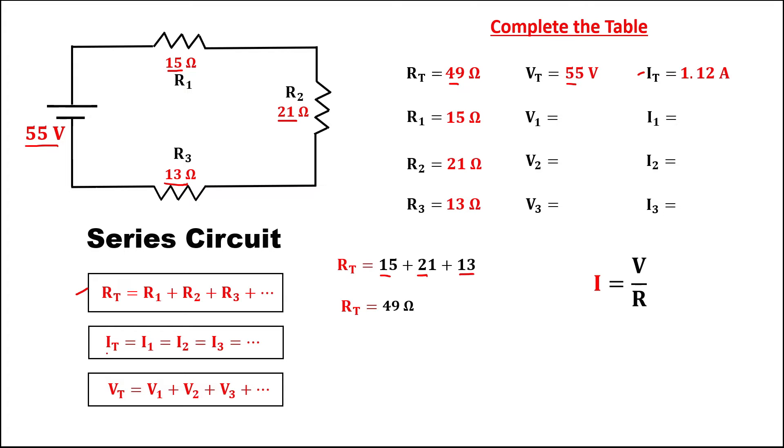Since in a series circuit, all the currents are equal, therefore, for current 1, also equal to 1.12, this is also 1.12, and this is also 1.12.